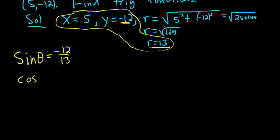The cosine of theta, that's x over r. So that'll be 5 over 13. And then the tangent of theta, that's going to be y over x. So negative 12 over 5. So negative 12 over 5.